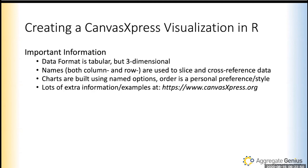The order of options is your personal preference. There is a ton of extra information at canvasexpress.org with examples. Since this is a JavaScript package, if you write Java or Python applications and want to bring in the JavaScript library separately, it is not limited to R. So if you have hybrid enterprise pipelines — maybe using R for research and something else for enterprise apps — you can still build these charts.